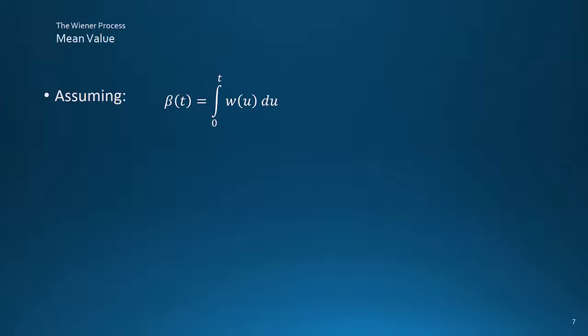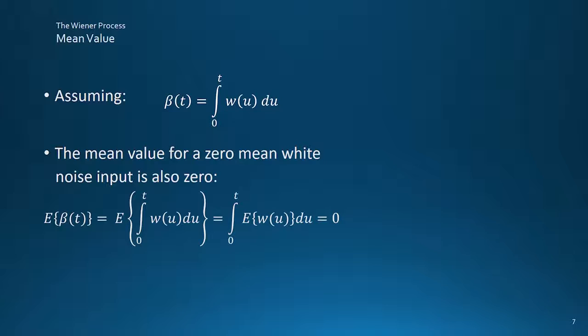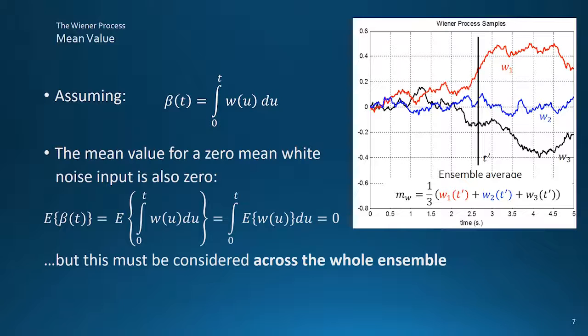So starting with the mean, and assuming the integration of white noise definition, a zero-mean white noise input integrates to give an output mean value which is also zero. So that ties up okay. Notice though that individual sample plots don't look like this. We'd need to average across an overall ensemble of several samples rather than take a time average of one sample as we could for a stationary process, as this will tend to wander off.